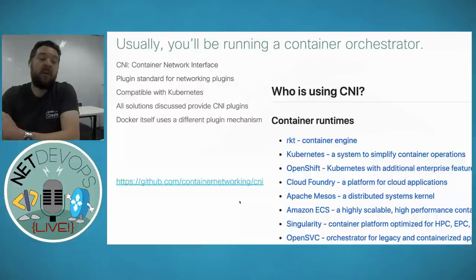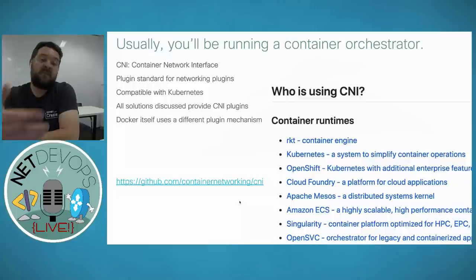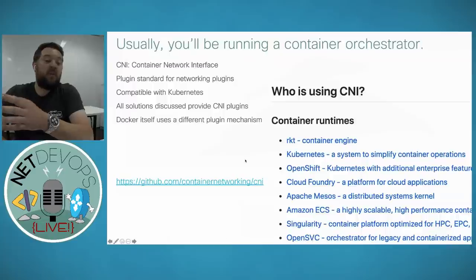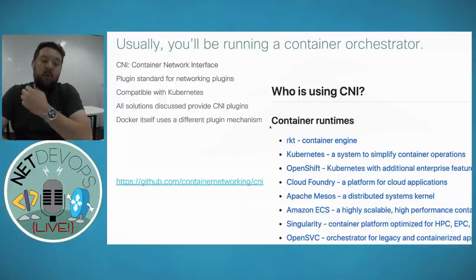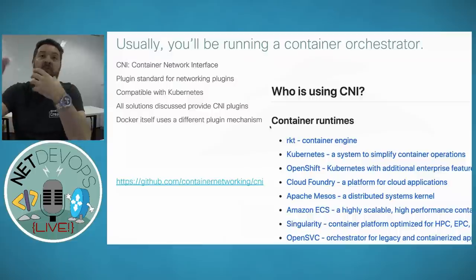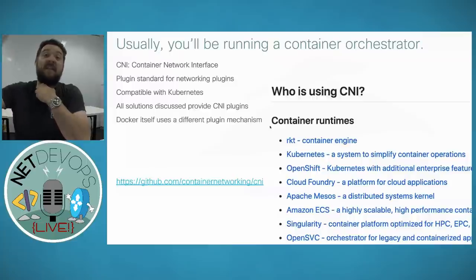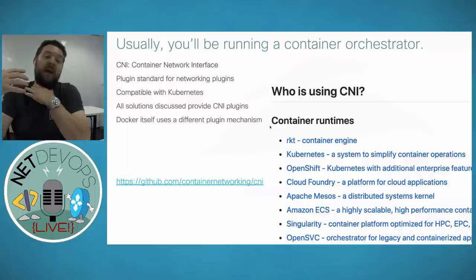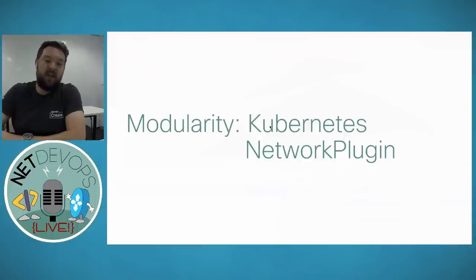CNI is the orchestrator-level standard for packaging your networking solution: here is how you need to package your networking agent and commands so that when the orchestrator needs to create a new container, it tells your plugin to network it, your plugin does whatever it wants, then gives back the information. Implementing network plugins is all done through CNI.